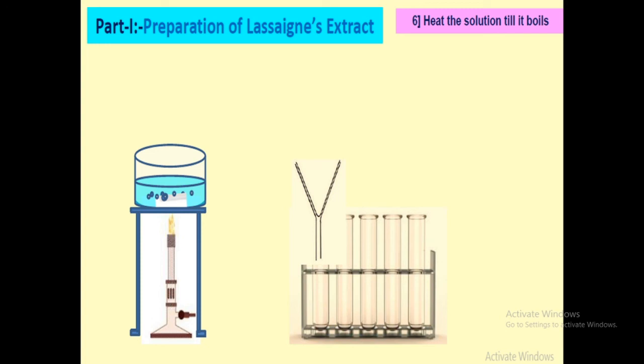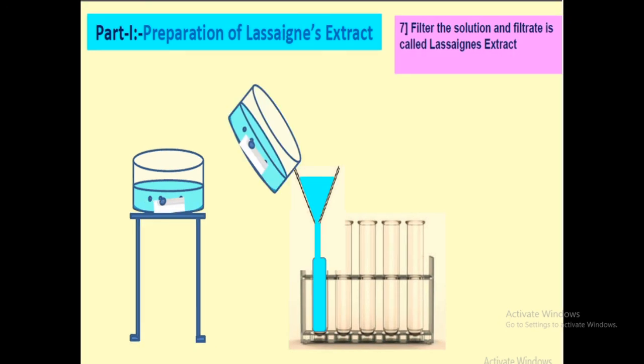Preparation of Lassaigne's extract is a very delicate and complex process in which we have to take care of all the things. That's how we can prepare the sodium fusion or Lassaigne's extract. We filter it into three tubes and now we have three tubes having sodium fusion extract, which can be used for further detection of elements like nitrogen, sulfur, and halogen. Thank you so much.